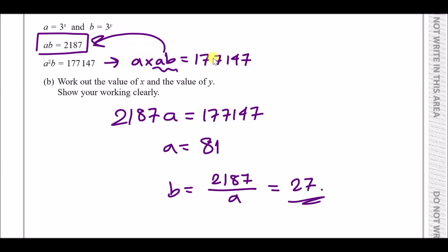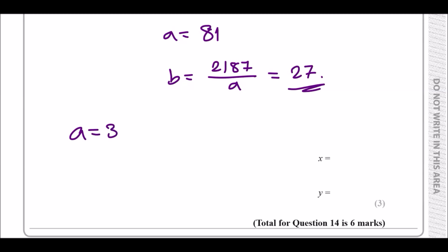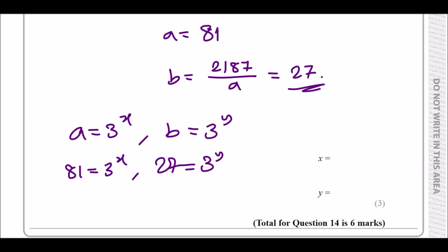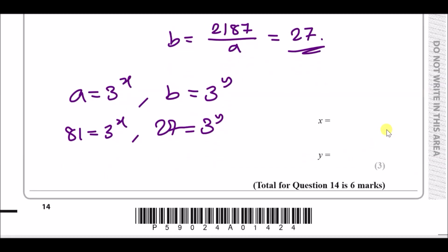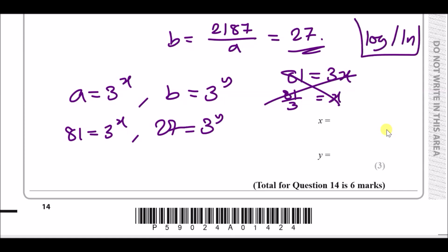Now that we have a and b, we plug them in: 81 equals 3 to the power x, and 27 equals 3 to the power y. To solve equations in terms of powers, we use logarithms. So x equals log 81 over log 3.